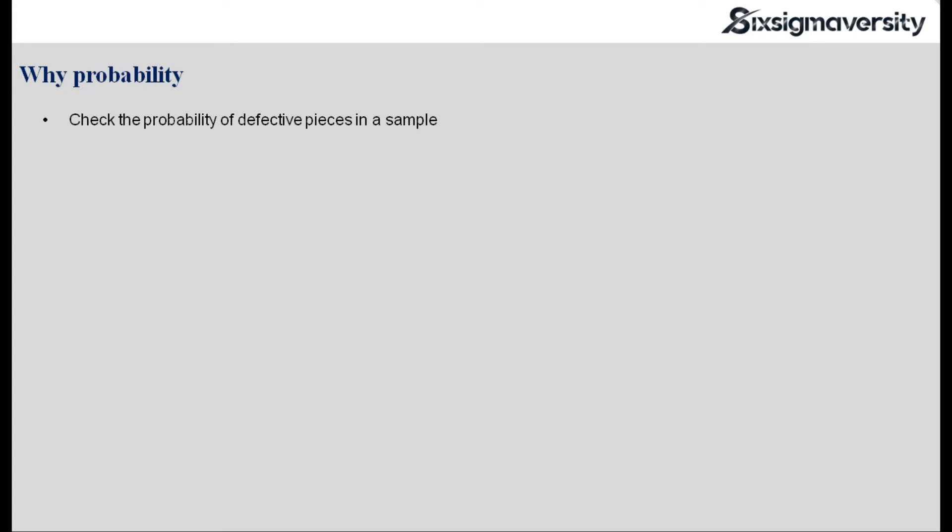Where do we use probability? We use probability in manufacturing to check the probability of defective pieces in a sample. For example, if I am the manufacturer of certain products which need to go to a buyer, I will send a list of parts and the buyer will receive those parts, take a portion or a sample of the lot I am sending, and inspect if there are any defects within that sample. If the buyer identifies some defects in that sample, they would probably reject the entire lot back to the seller or the manufacturer. So this is a loss for the manufacturer.